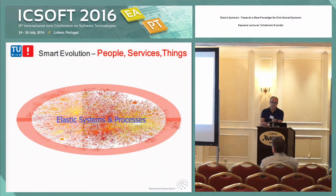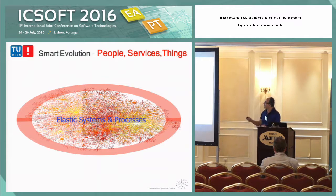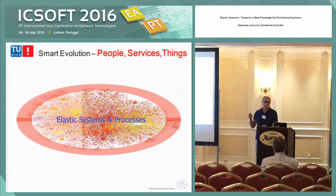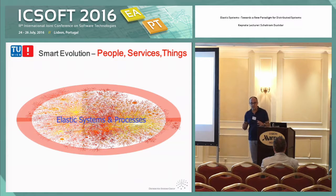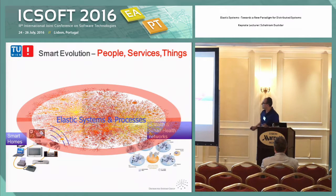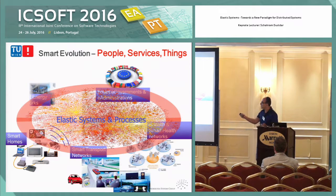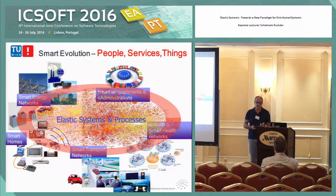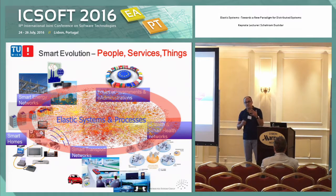When we look at the landscape today, my claim is that what we are seeing is basically a smart evolution, as I call it, of three building blocks of computing systems. People, software services, and things are increasingly being put together into information systems. And there are many instances of examples: we can have smart homes, e-health systems, governmental networks, transportations, or energy networks. And all of these systems of the future have these three building blocks inside them.